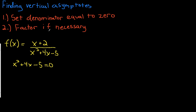Step two is to factor. This one isn't too hard — you're basically looking for multiples of negative five that add up to four. Two multiples of negative five that add to four are five and negative one. If you forget how to factor, refer back to a previous video on factoring. We split this into (x + 5)(x − 1) = 0.